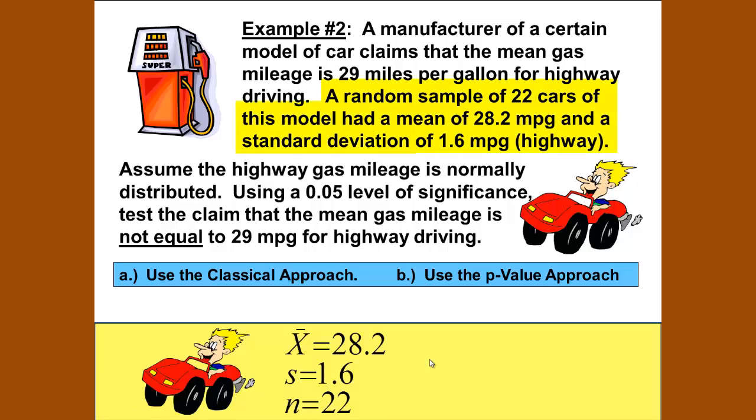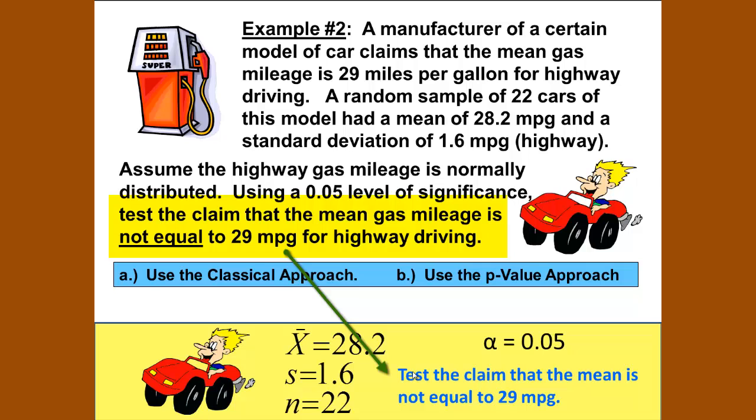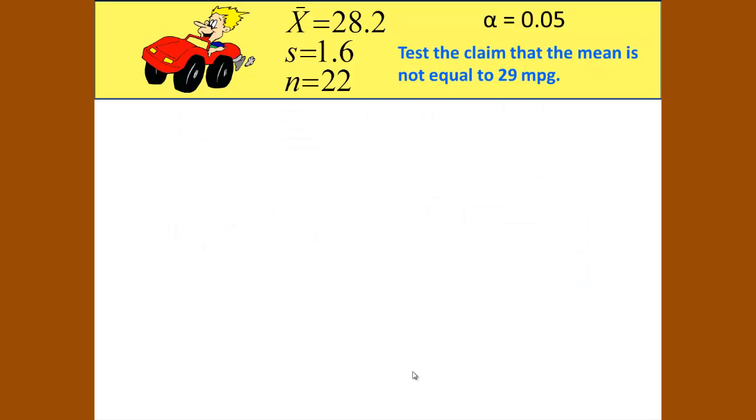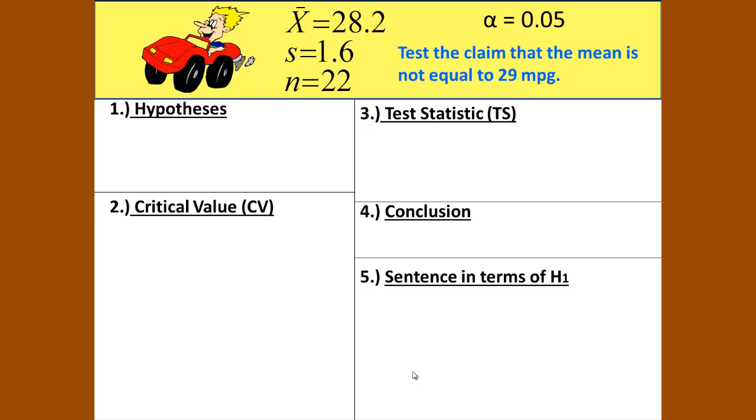Looking at our problem we can determine that our sample mean x bar is equal to 28.2, our sample standard deviation s is 1.6, and our sample size n is equal to 22. Our level of significance alpha is 0.05 and we are testing the claim that the mean is not equal to 29 miles per gallon.